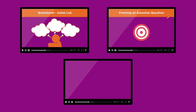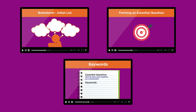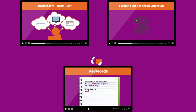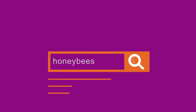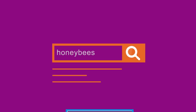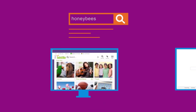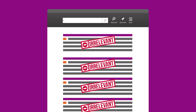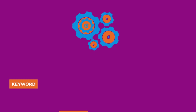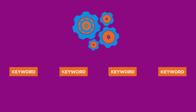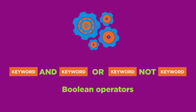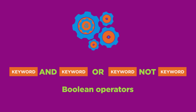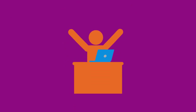In previous videos, you learned about choosing a topic, developing a research question, and using keywords. Now you're ready to start searching for information. When searching in a library database or on the internet, you may not get the best results at first. In this tutorial, you'll learn how to combine keywords into effective search strings by using Boolean operators to narrow or broaden your search results. This will put you in control of your searching.